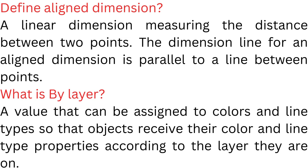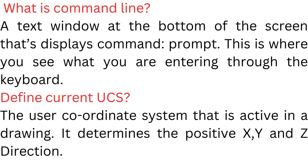What is a layer? A layer is a value that can be assigned to colors and line types so that objects receive their color and line type properties according to the layer they are on.